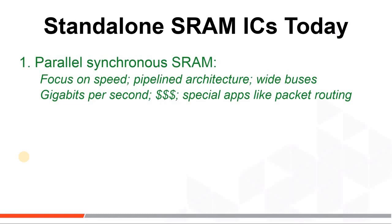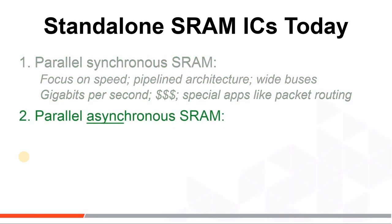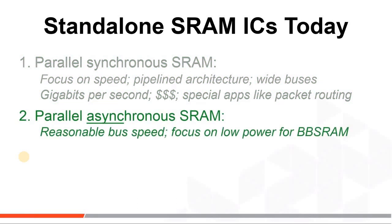Next is parallel asynchronous ICs. These have access times like 25 nanoseconds to 45 nanoseconds. But designers value low current here: low active current, standby current, low sleep current. Why? Because these low currents make asynchronous SRAMs live longer on battery charges. See our video 'What is BBSRAM' to understand what battery-backed SRAMs are all about.